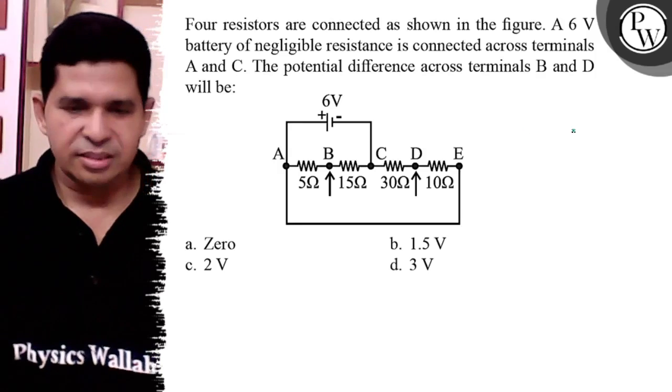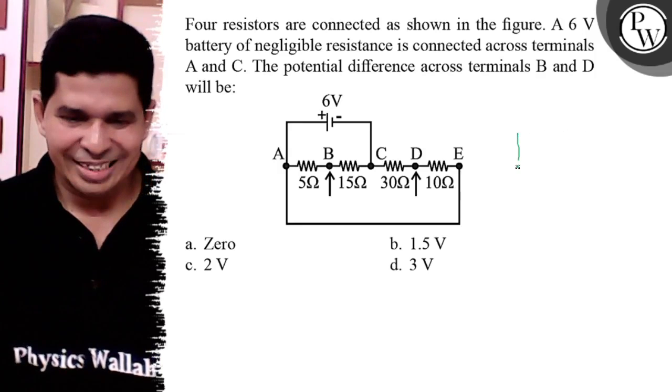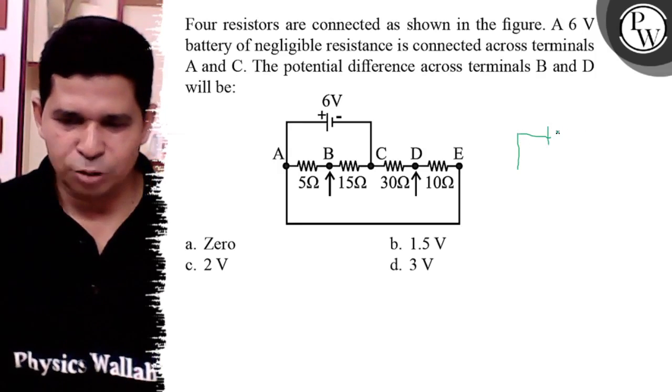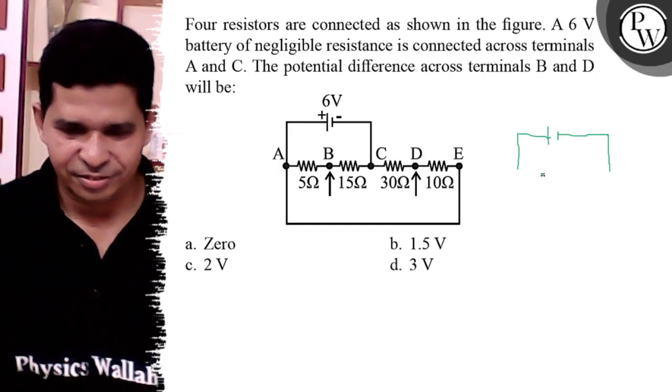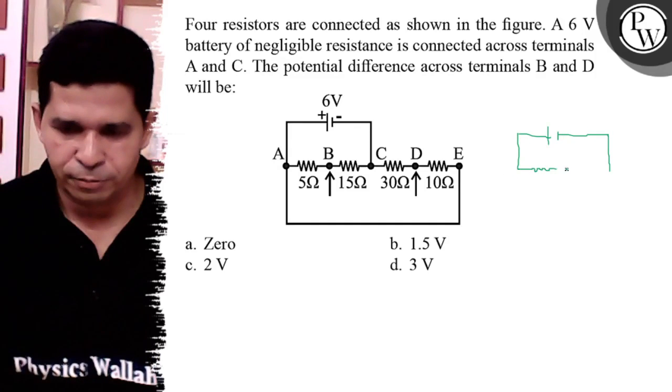What is this question? Here is point A, the 6V battery, and here is 5 ohm, here is 15 ohm.